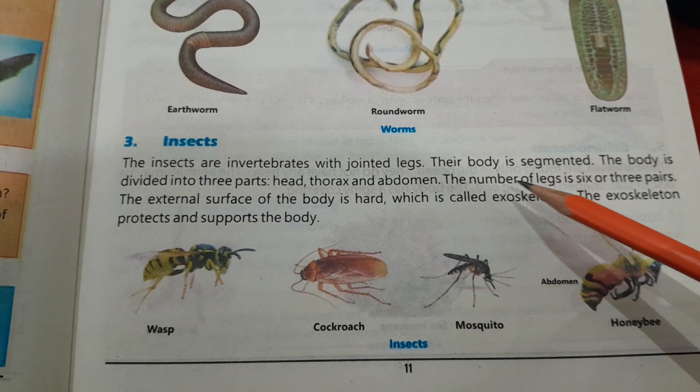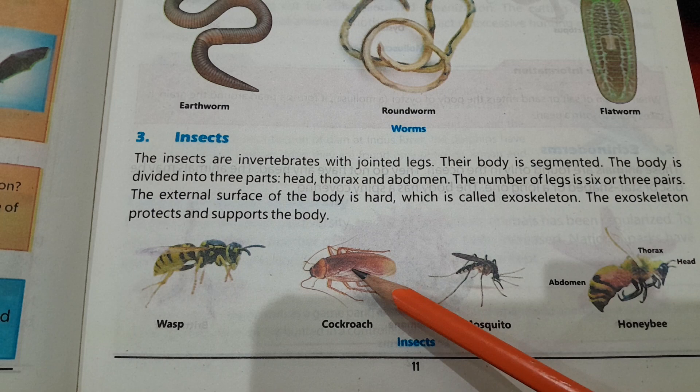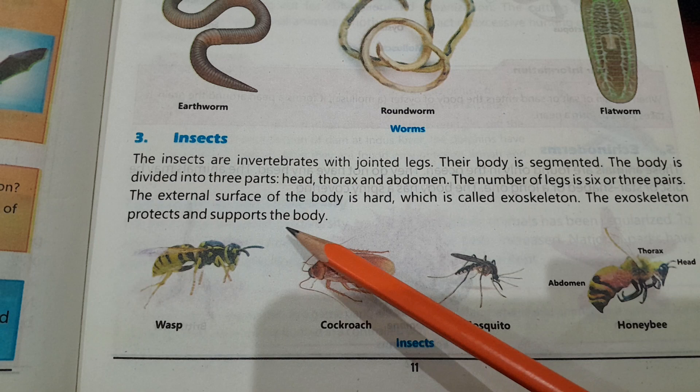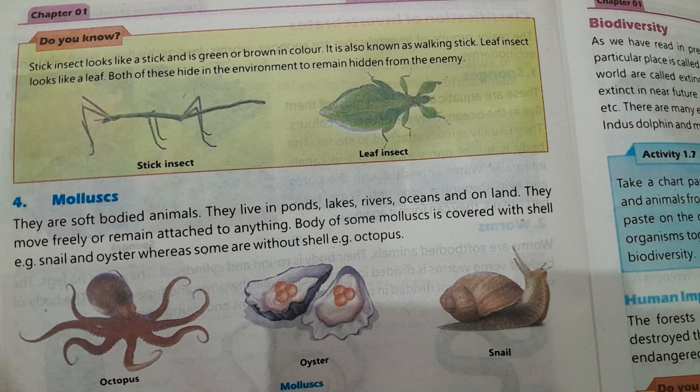The number of legs is six, or three pairs. The external surface of the body is hard — سخت ہوتی ہے — which is called exoskeleton. The exoskeleton protects and supports the body. جو exoskeleton ہے یہ ان کی body کو protect اور support دیتا ہے۔